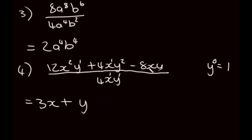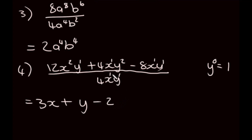For the third term, negative 8xy over 4xy: negative 8 divided by 4 gives negative 2. For x: 1 minus 1 is 0; for y: 1 minus 1 is 0. Both cancel to 1, so we just leave it as negative 2. That is our final answer: 3x plus y minus 2.